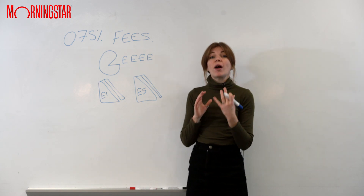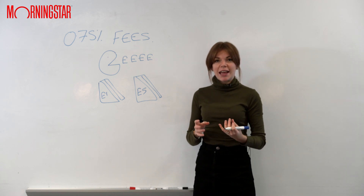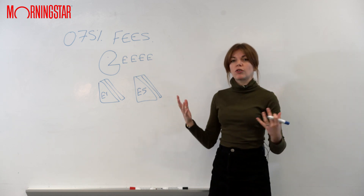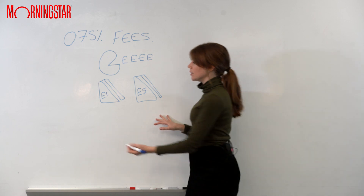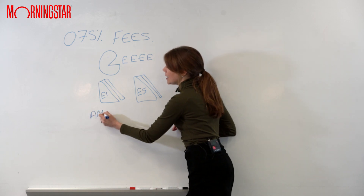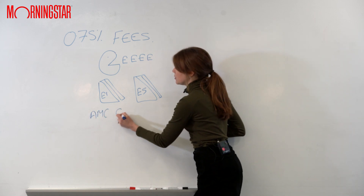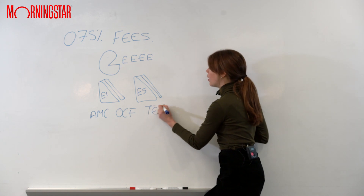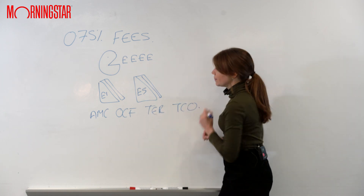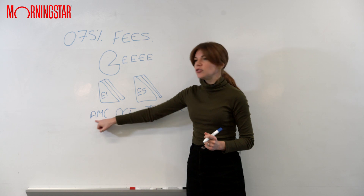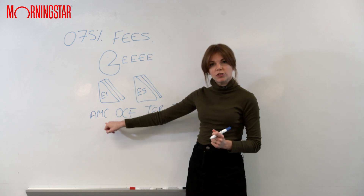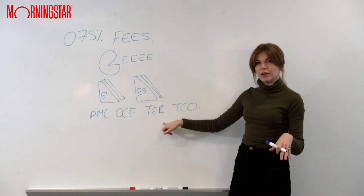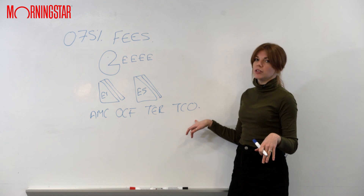It can be quite difficult to compare fees because they have a lot of different names — this is another way the industry tries to bamboozle us. We can have the AMC, the OCF, the TER and the TCO. In case you're wondering, that's annual management charge, ongoing charge figure, total expense ratio and total cost of ownership.